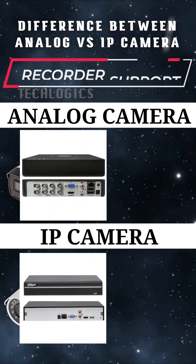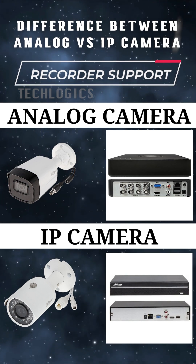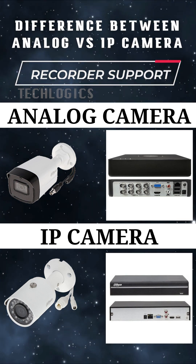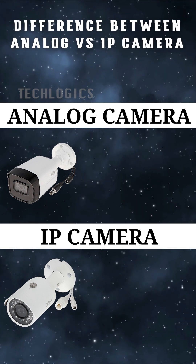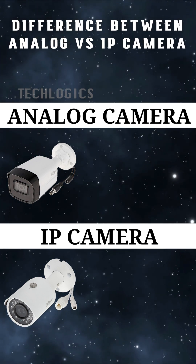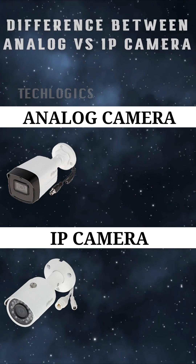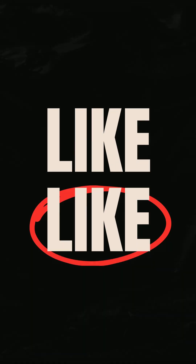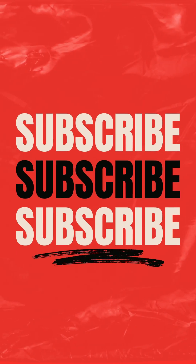Analog cameras use a BNC connector for video output and often a separate power connector. They use coaxial cables, such as RG59, for video transmission and separate power cables, usually with a 12V DC connector. IP cameras typically have an Ethernet port, RJ45, for network connectivity.